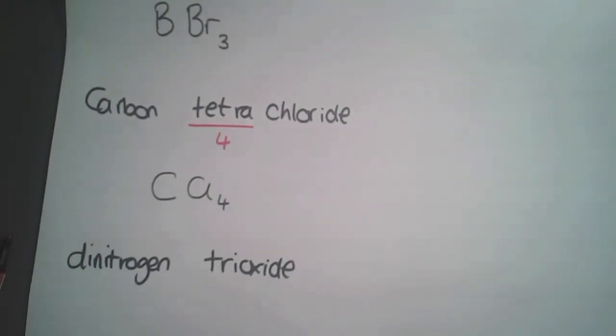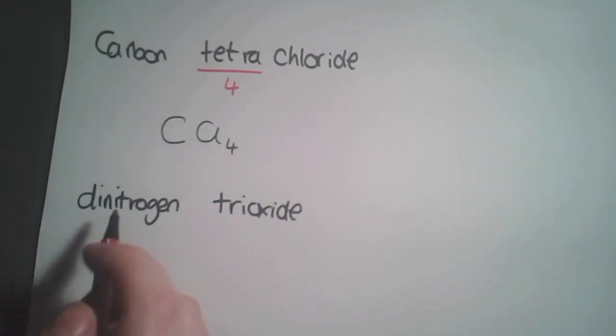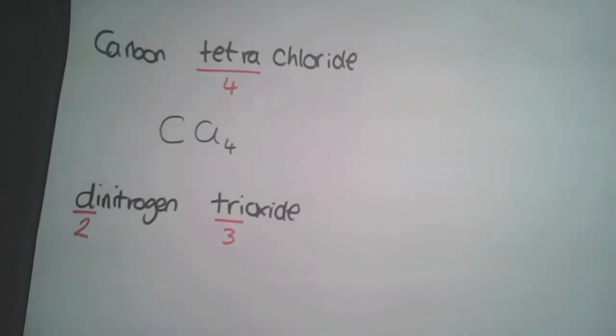The final example has two prefixes: we have dinitrogen trioxide. So what this name tells us is that we have two nitrogens and three oxygens, so you have N2O3.